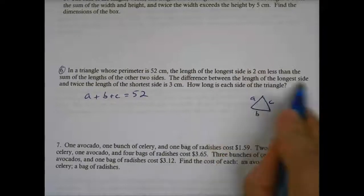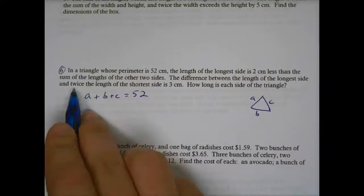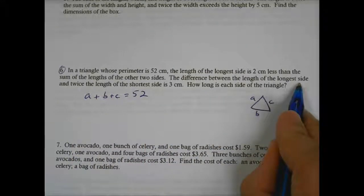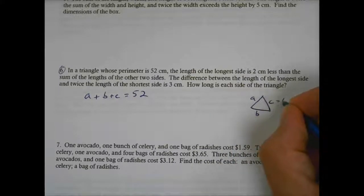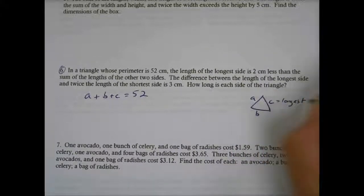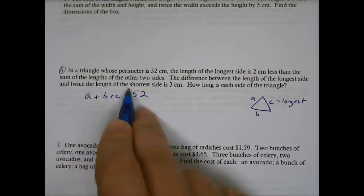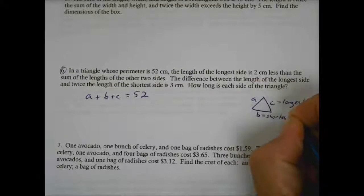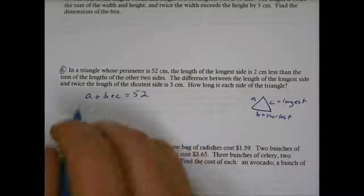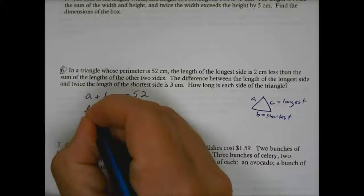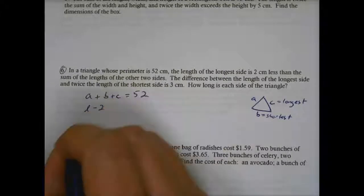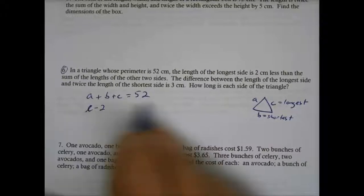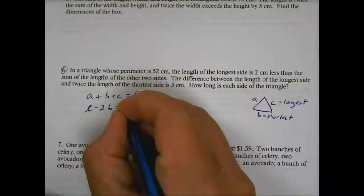So the difference between the length of the longest and twice the length of the shortest is three. So the difference between the length of the longest, let's call our C our longest, and twice the length of the shortest, let's call B our shortest, is three. So the length of the longest minus twice the length of the shortest, which is B, so minus 2B, is three.